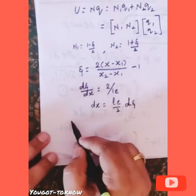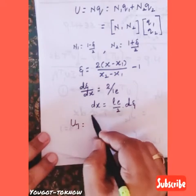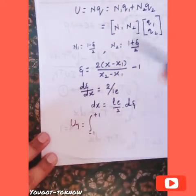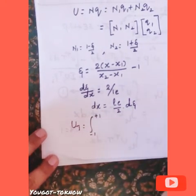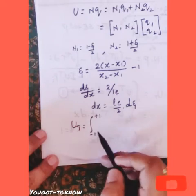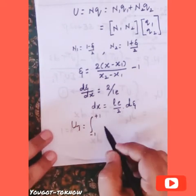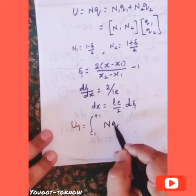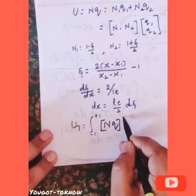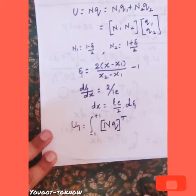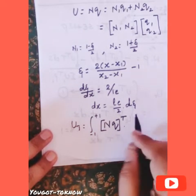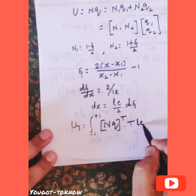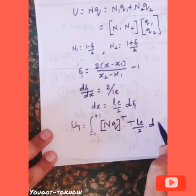Bringing this into the expression, u_t equals the integral from minus 1 to plus 1 of (Nq) transpose times t times (L_e/2) dζ, because the limits change to minus 1 to plus 1 as I replace dx by (L_e/2) dζ.